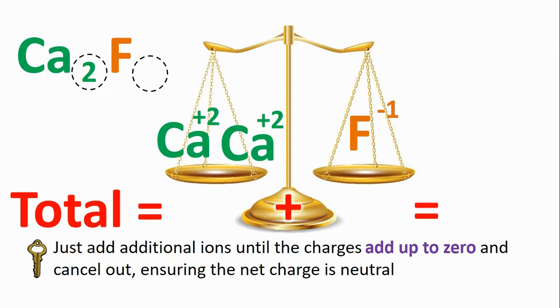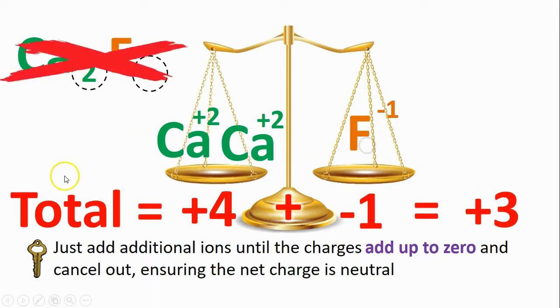So let's try a different scenario. What if there were instead two calciums? That would make my formula Ca2F because there's two of them, F because there's just one fluoride. Now my total positive charge is +4, my total negative is still -1. That's actually further away from being balanced. It was two and one, now it's four and one. Or think about it in terms of totals. Now my total is a +3. That's further away from zero. This is not going to work. Adding more calciums is not going to help these two sides balance.